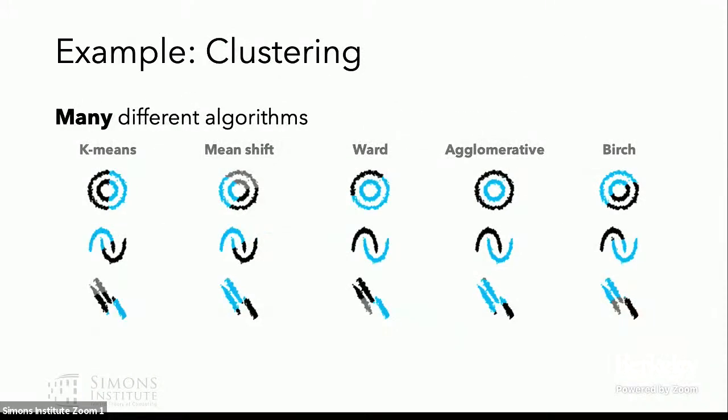Another great example of a computational problem with many different applications is clustering. And there are many different clustering algorithms you could use. So here, for example, are five different clustering algorithms, which I've used to cluster these three small clustering instances. And you can see that some of these algorithms work really well on some of the instances and not so well on the others.